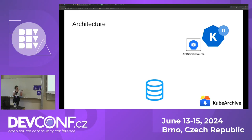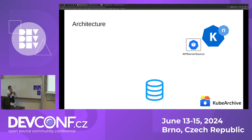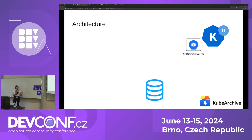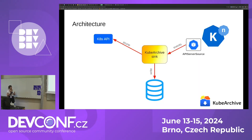Now we need something to notify kubearchive when a resource we want to archive is available. For that, Knative provides a custom resource called API Server Source, in which you can configure what kind of resource you want to monitor and in which namespace. We also did a PR so that we can also specify what status we want to get notified about for this resource. You also need to configure where you want these events to go — this is going to be a sink, as opposed to the API Server Source.